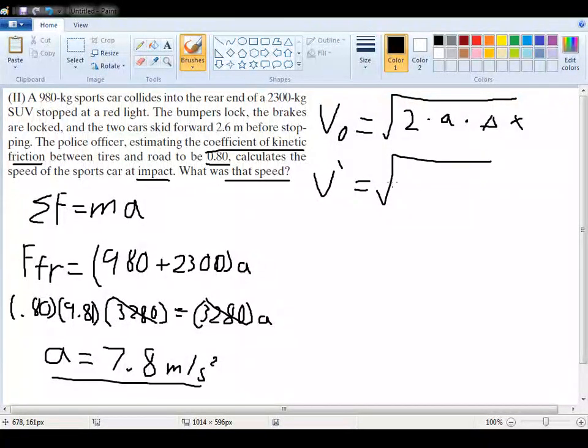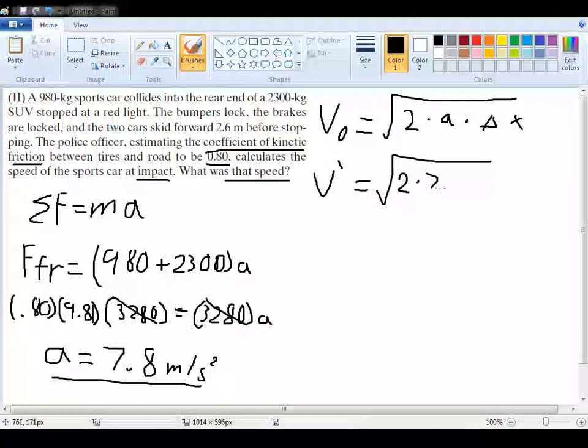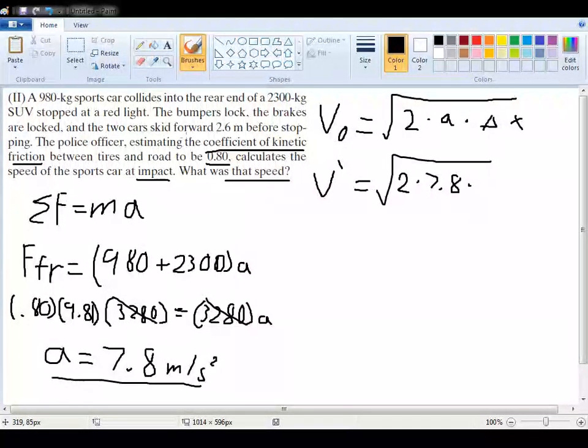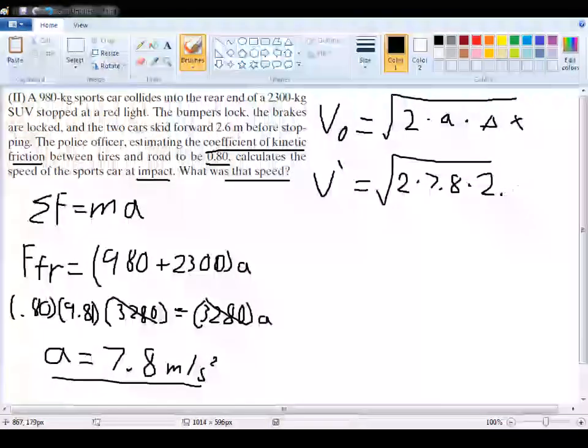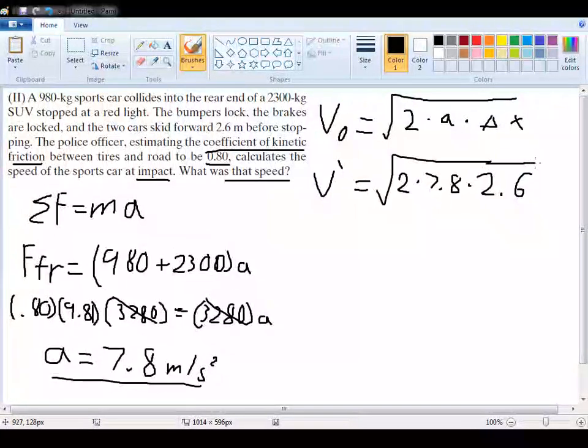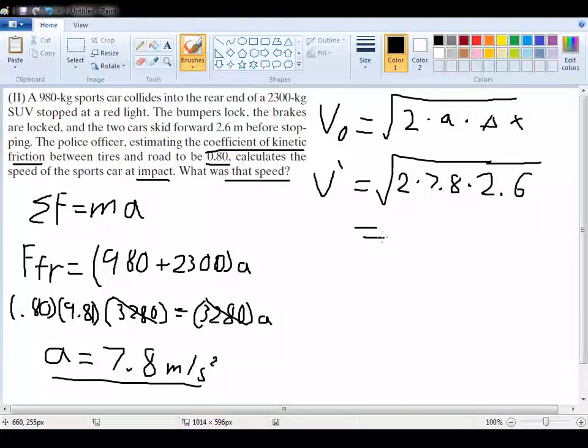The square root of 2 times our acceleration, 7.8, times the change in distance, which is given to us as 2.6 meters, which is equal to about 6.4 meters per second.